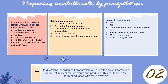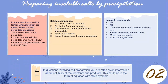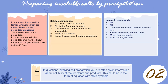Let's compare soluble and insoluble compounds. Soluble compounds include: all salts of Group 1 elements; all nitrates and ammonium salts; most chlorides, bromides, and iodides; most sulfates; Group 1 carbonates; and Group 1 hydroxides and barium hydroxide.